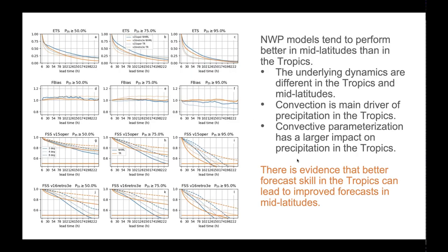Numerical Weather Prediction models tend to perform better in mid-latitudes than in the tropics when it comes to precipitation forecasts. Part of the reason is that the underlying dynamics are very different: in the tropics, convection is the main driver of precipitation, compared to mid-latitudes where larger-scale wave trains, Rossby waves, and fronts are the main driver. Because of that, convective parameterization has a much larger impact on precipitation forecasts in the tropics.